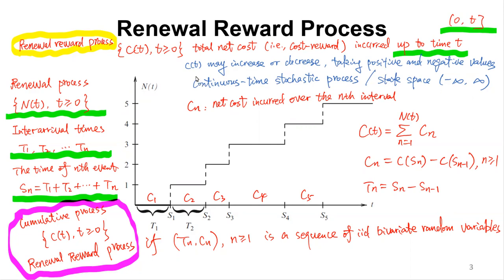The state space is minus infinity to infinity. So ct is the total net cost by time t. cn is the net cost incurred over the nth interval. For example, c4 is the net cost incurred in the fourth time interval.